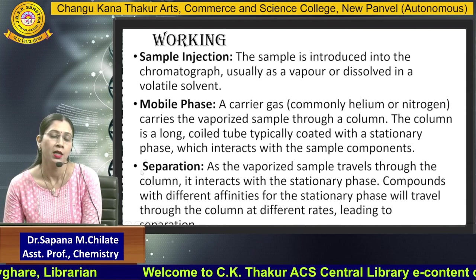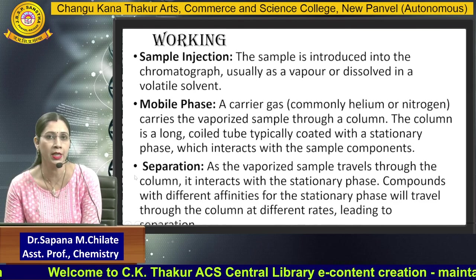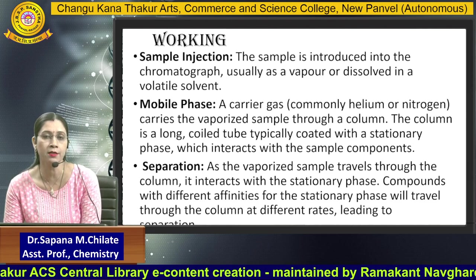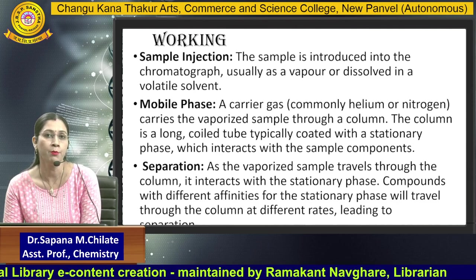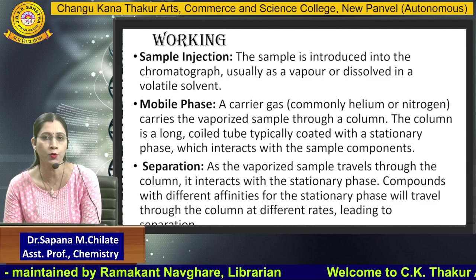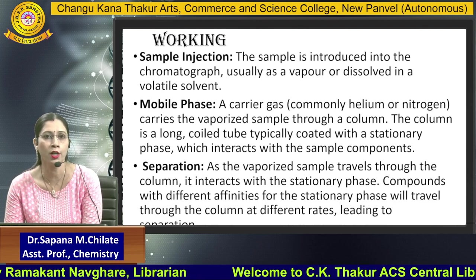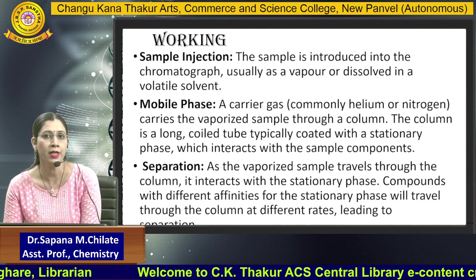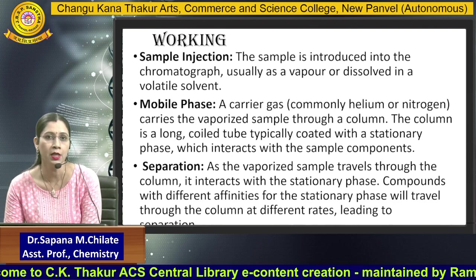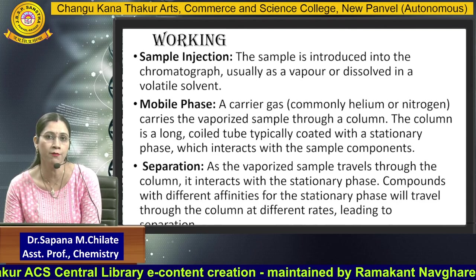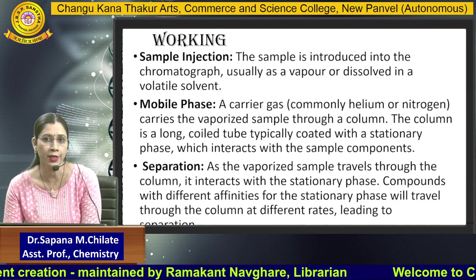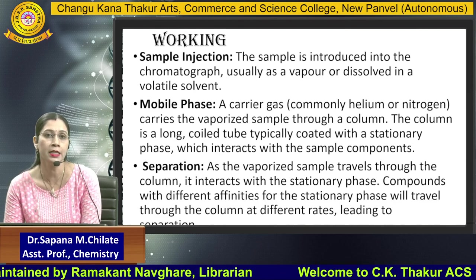Regarding the working of GC, gas chromatography has different components including the sample injection system, where the sample is injected and forms a mist and then dissolves with the volatile solvent. The mobile phase — carrier gas like helium and nitrogen — carries the vaporized sample throughout the column. The column is long, coiled, and typically coated with a stationary phase which interacts with the sample so that different components are separated. Separation of the vaporized sample through the column depends upon the interaction of the sample with the stationary phase; compounds have different affinities for the stationary phase and travel through the column at different rates, leading to separation.